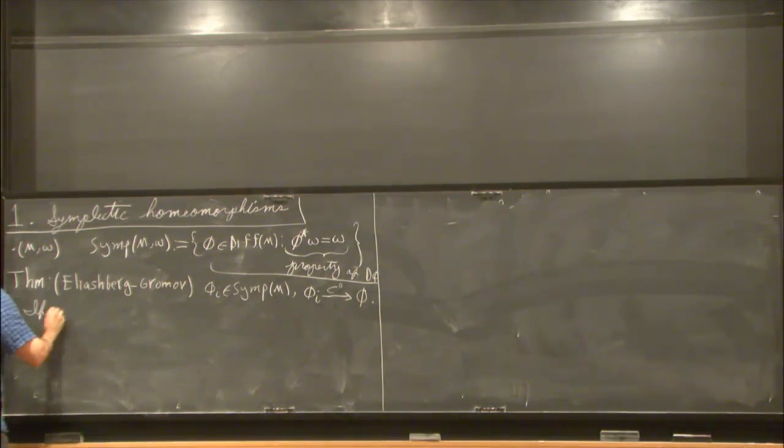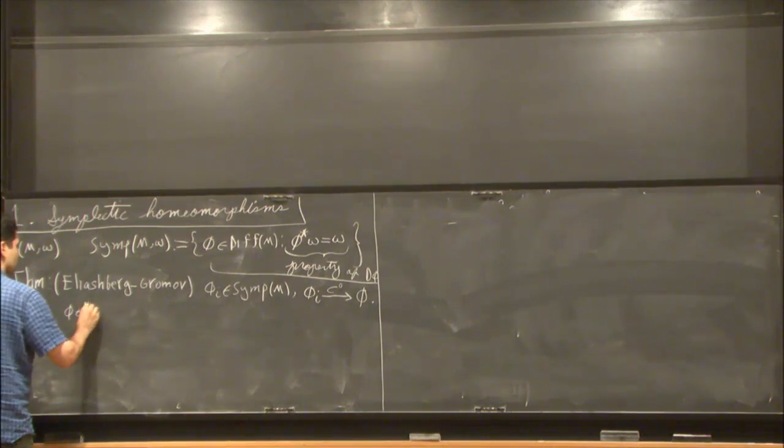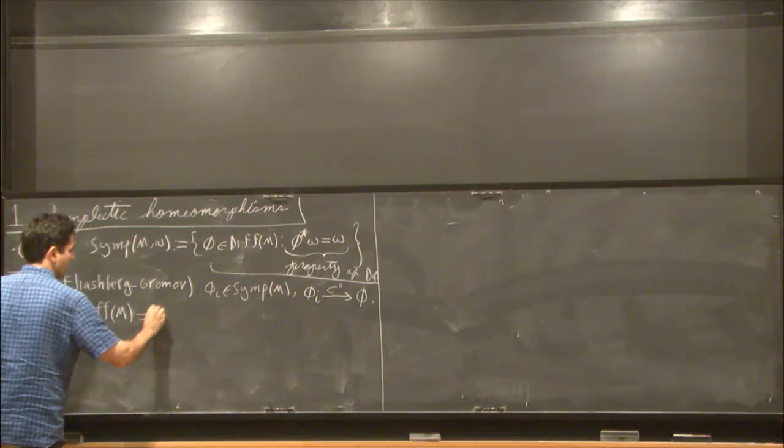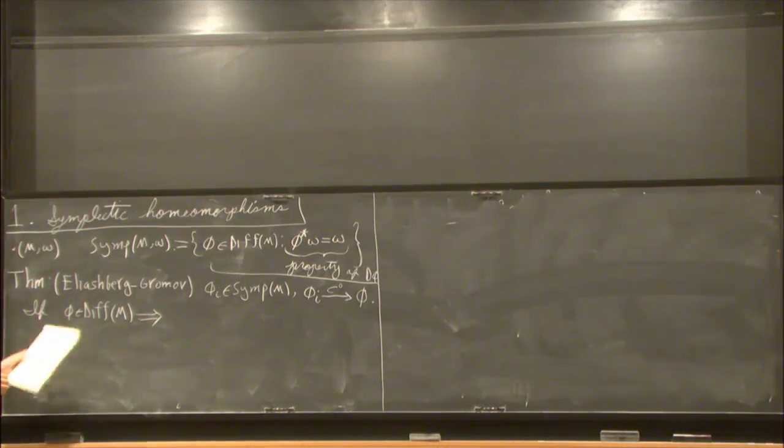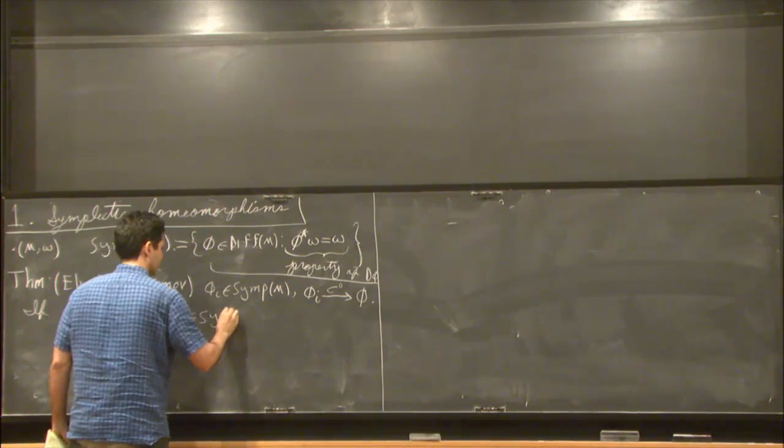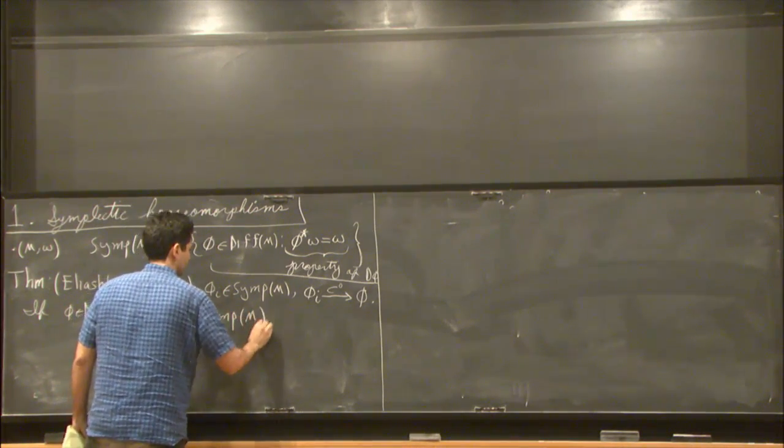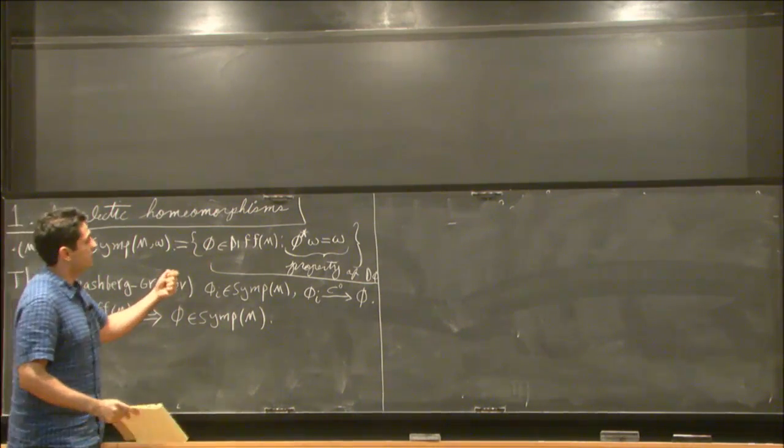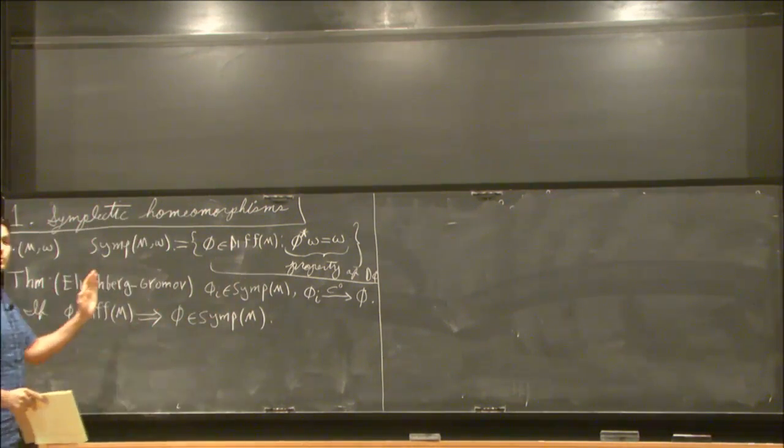Now, let's assume that the map is smooth, so let's assume it's a diffeomorphism, and now it has derivatives and we can ask if it's symplectic. And what this theorem says is that, yes, the limit map is automatically symplectic. So it says this C1 condition of being a symplectomorphism survives under C0 limits.